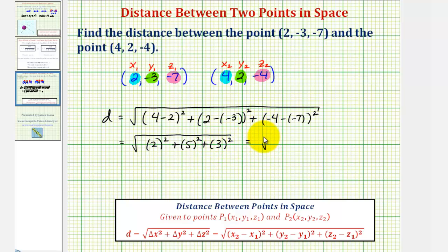So now we'll find the squares. We have 4 + 25 + 9, which gives us the square root of 4 + 25 is 29, plus 9 is 38.